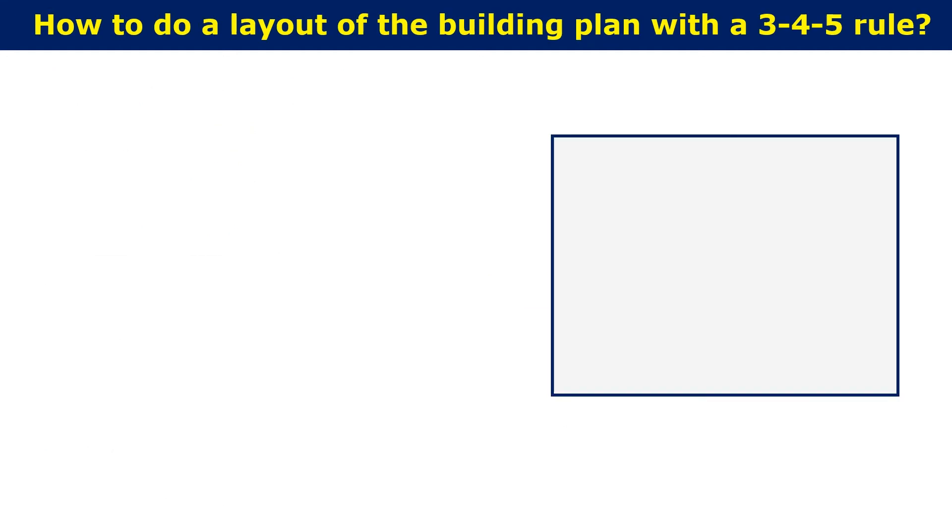How to do a layout in a building plan with 3-4-5 rule. Let us consider a building with corners L, M, N, O having 4 walls LM, MN, NO, OL.